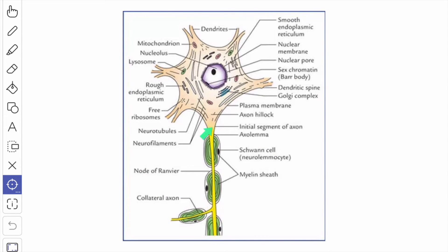We will see about the initial segment of the axon. The initial segment of the axon is also known as the pre-axon.